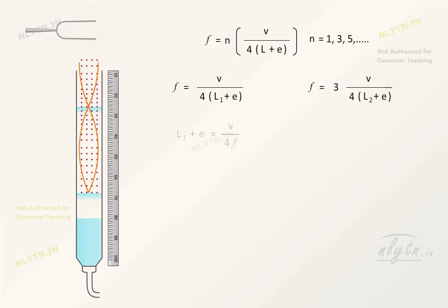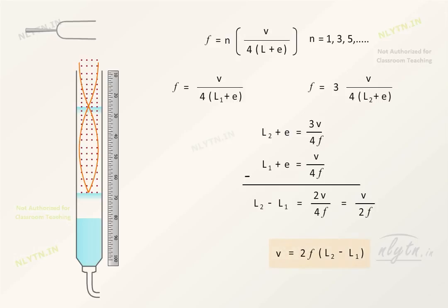Solving these equations, we get the speed of sound in terms of the difference in length where two maximas in loudness were heard.